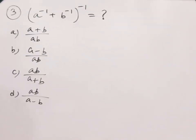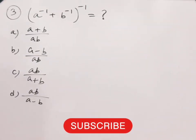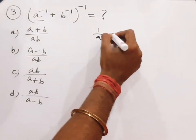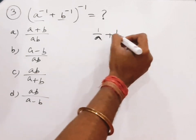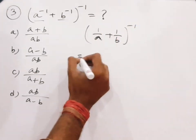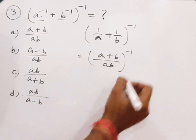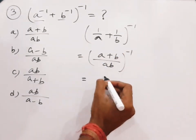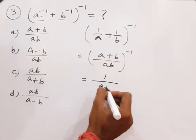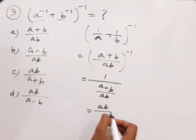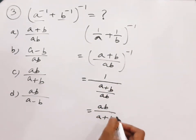Next question: (a⁻¹ + b⁻¹)⁻¹ equals question mark. Here a⁻¹ means 1/a and b⁻¹ means 1/b. The common denominator will be ab, so it becomes 1/a + 1/b = (a+b)/ab. Since it is the reciprocal, the answer is ab/(a+b), so c is the answer.